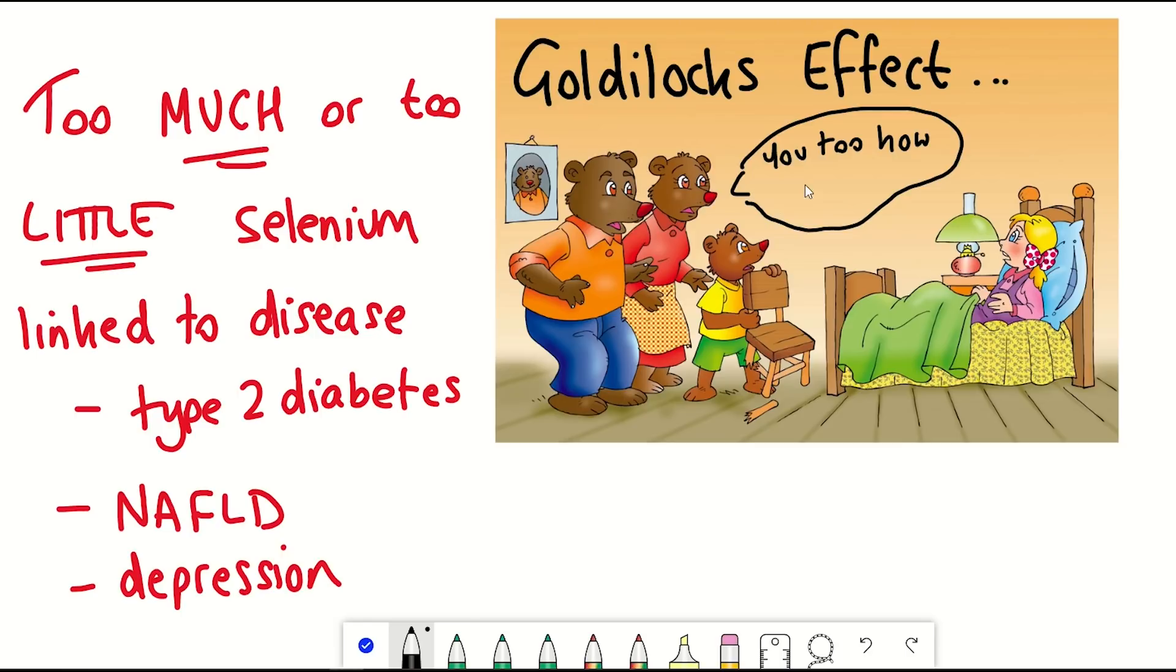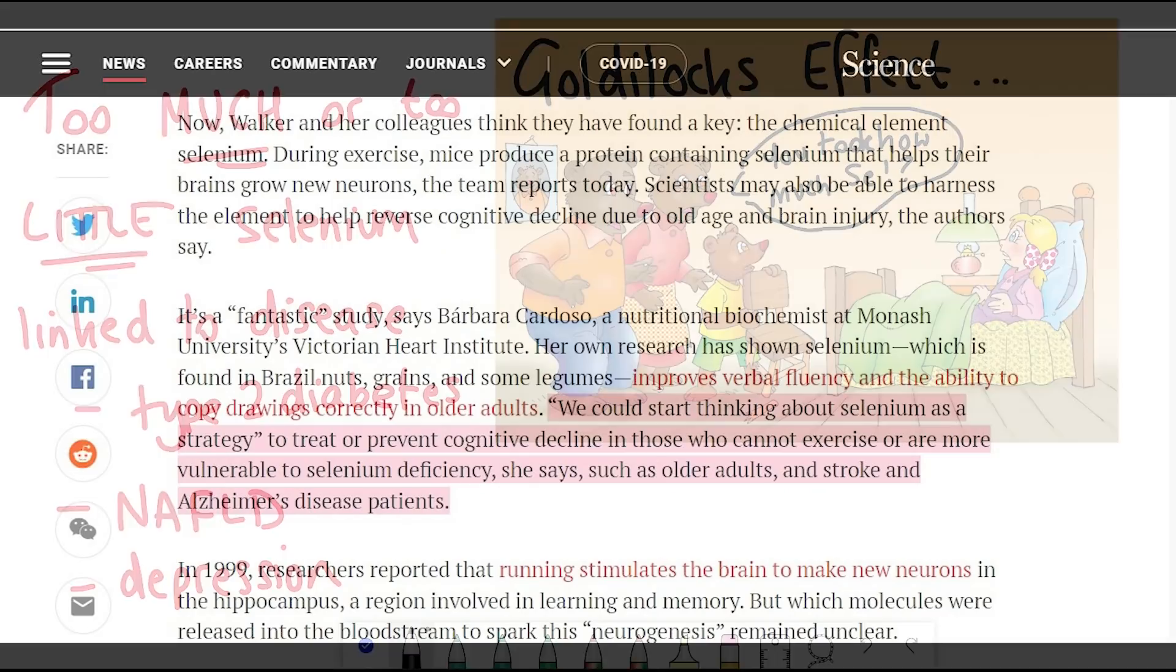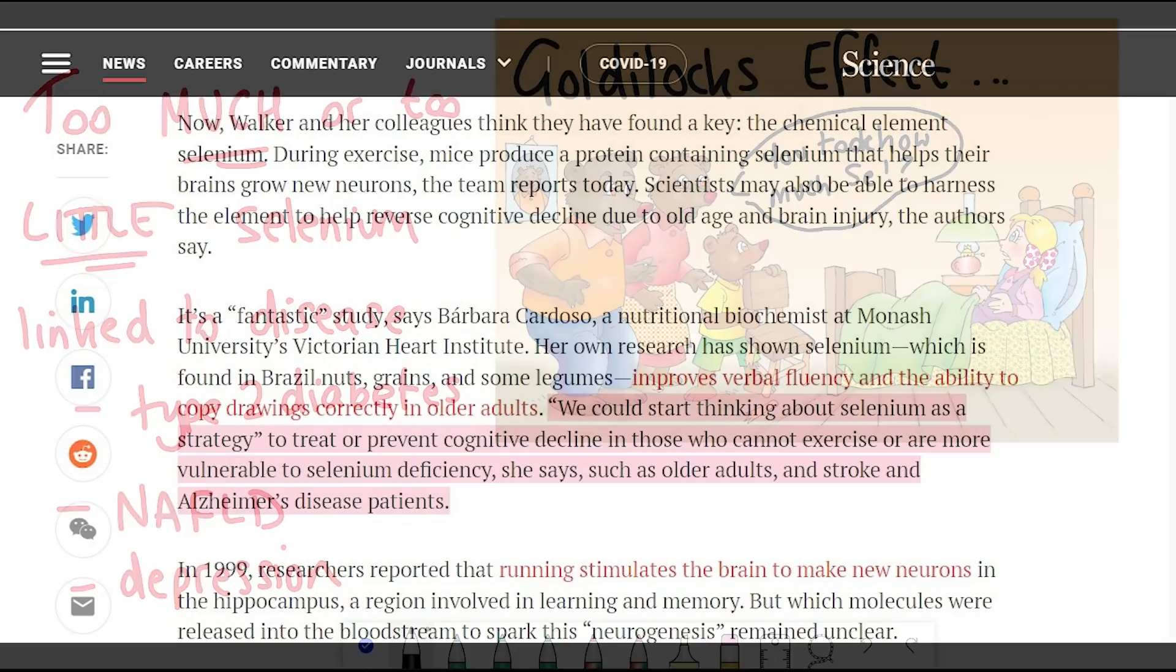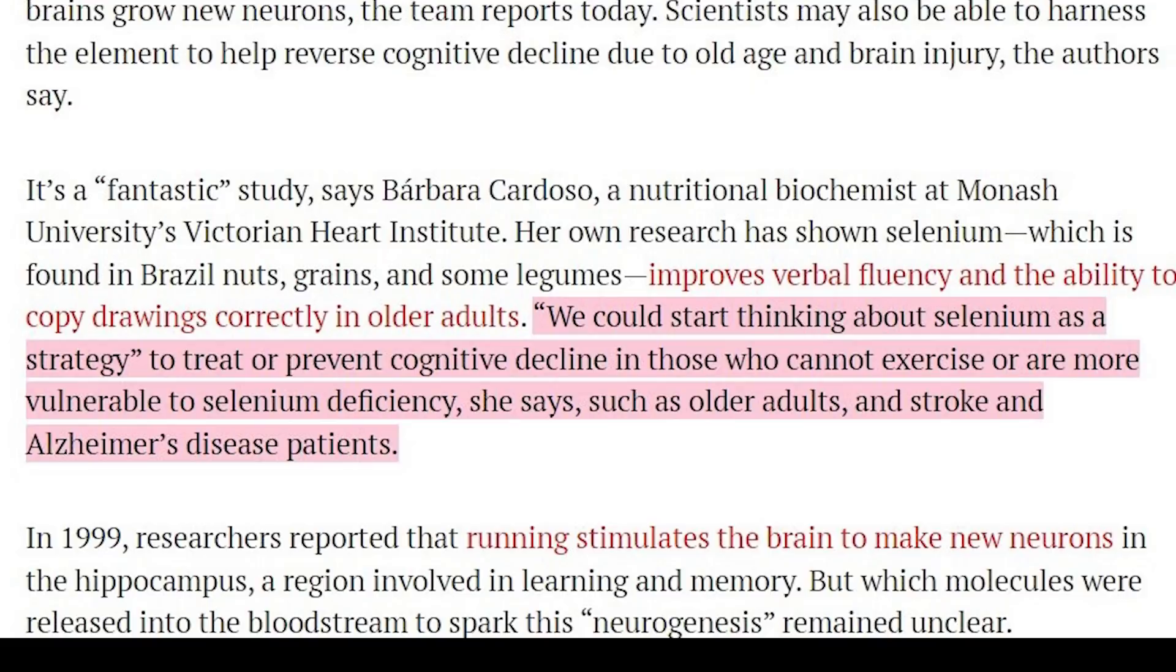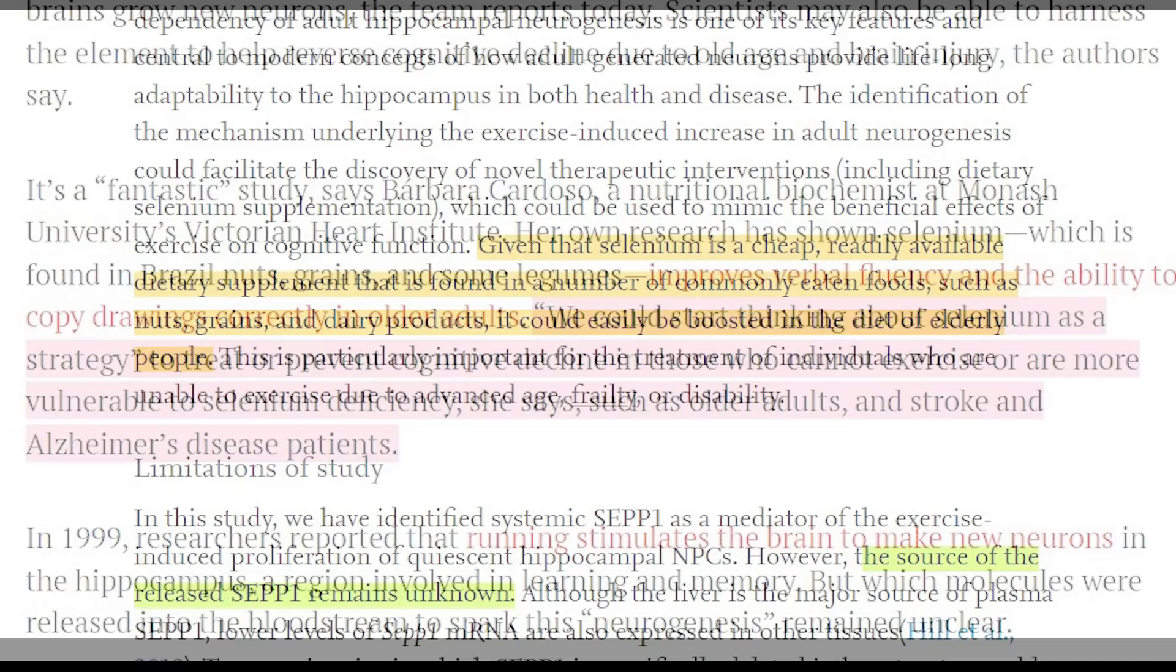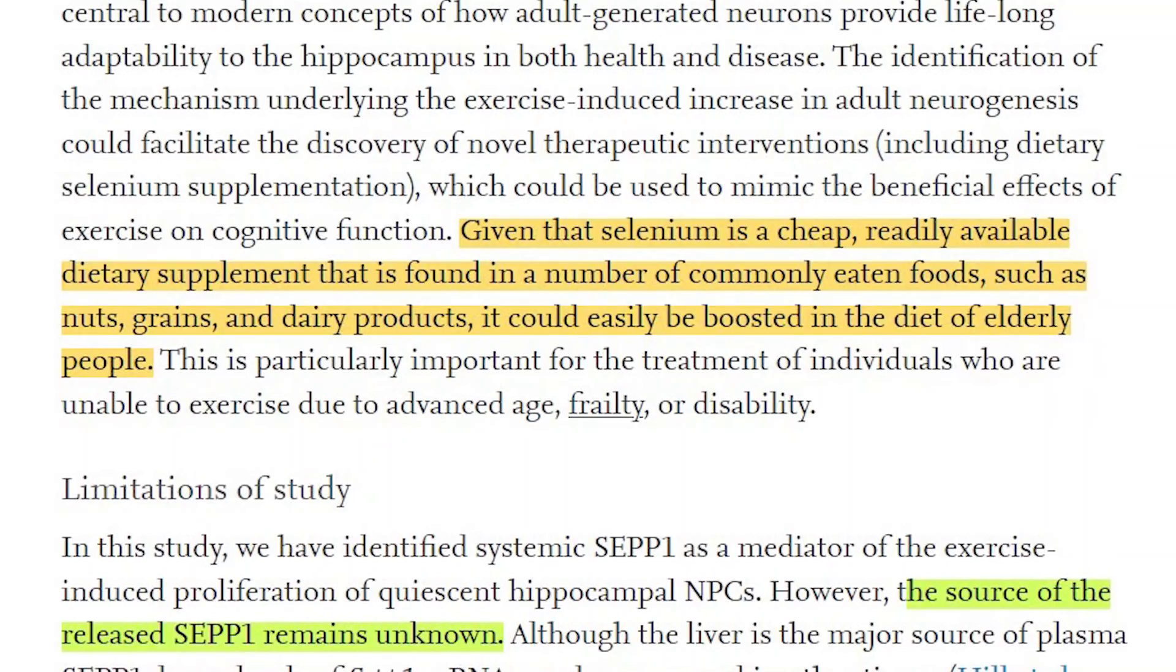So what can you take from this study? Well, to quote from this article, we could start thinking about selenium as a strategy to treat or prevent cognitive decline in those who cannot exercise or are more vulnerable to selenium deficiency, such as older adults and stroke and Alzheimer's disease patients. And added support for this comes from the fact that selenium is a cheap, readily available dietary supplement and is found in many commonly eaten foods so could easily be implemented into a diet.